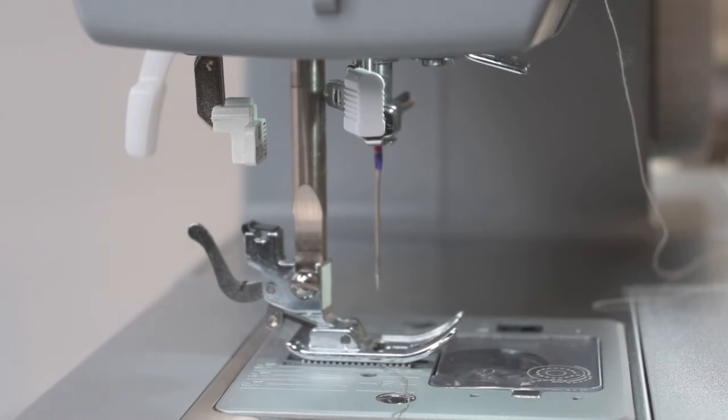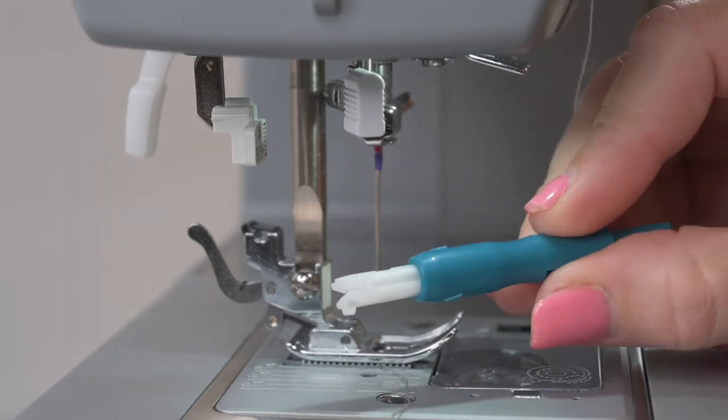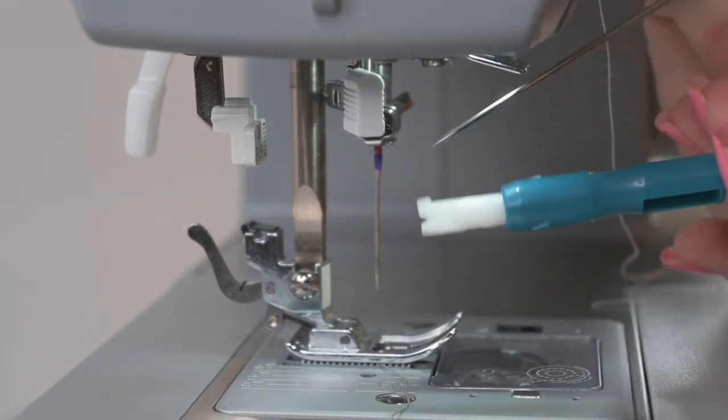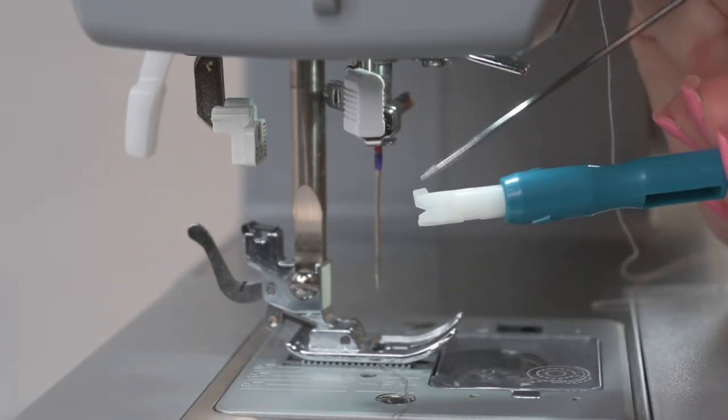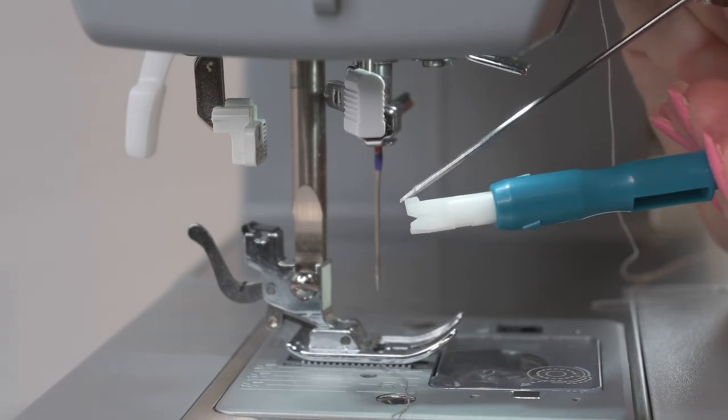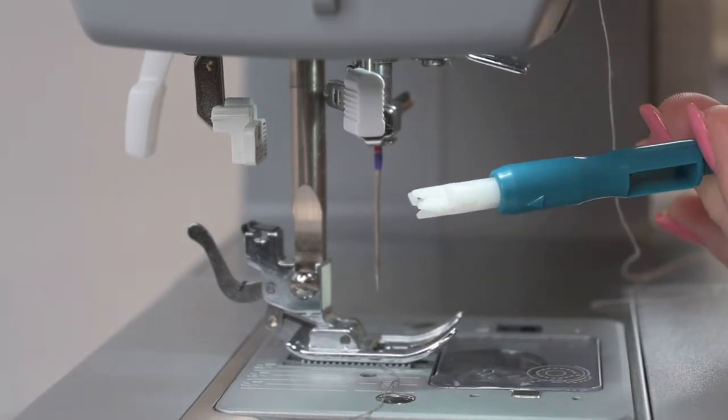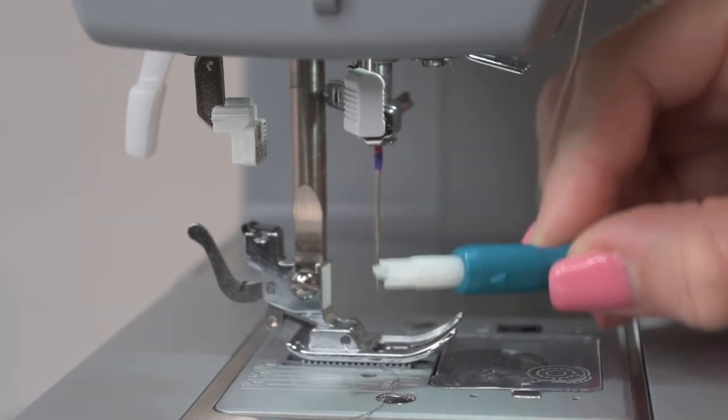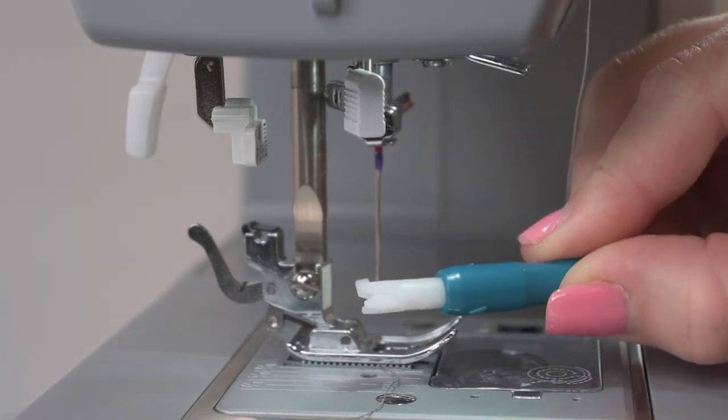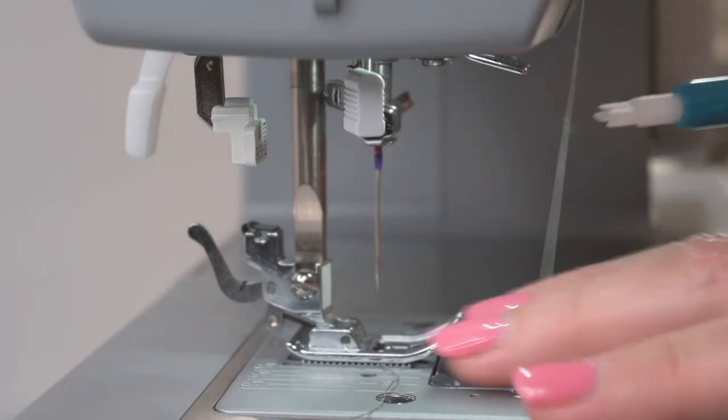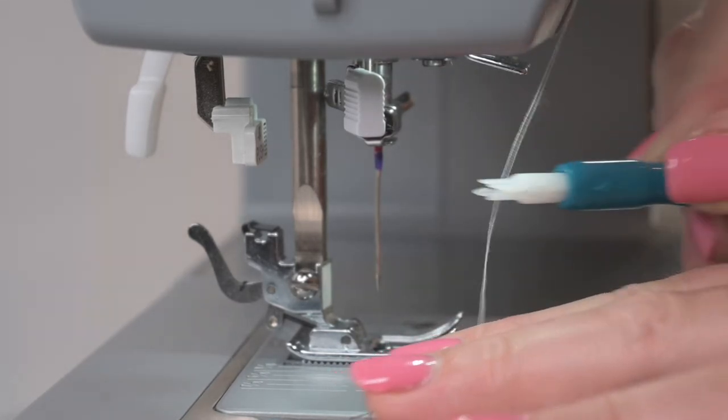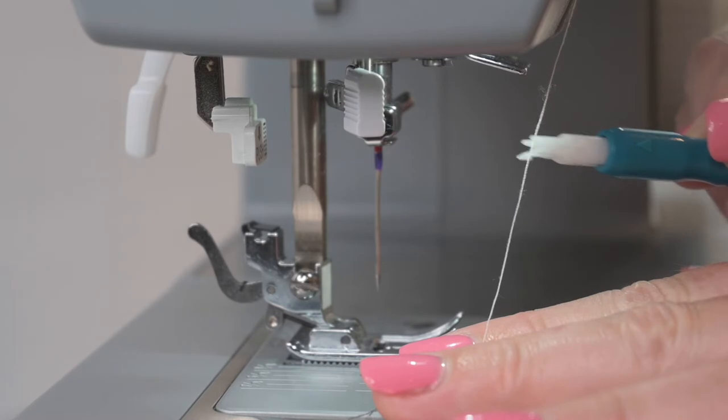So when I'm ready to thread my needle, I'll take my tool. I have that little hook that stands up on the needle, and ultimately this will be at the top of my tool. But for now, I want to put the thread through it. So I'm going to turn it on its side so that that little hook is now on its side, and I can just run the thread through the side of this tool.